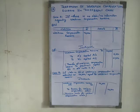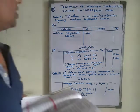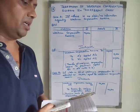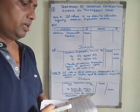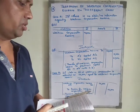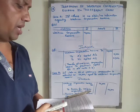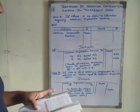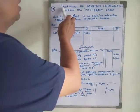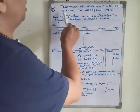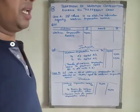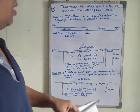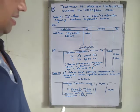We started the 13th video of Chapter 2, in which we began treatment of reserve and accumulated profit when there is a change in profit sharing ratio of existing partners. Now we are starting a new topic: treatment of workman compensation reserve in different cases. There are mainly 4 cases in which workman compensation reserve is adjusted in accounts.